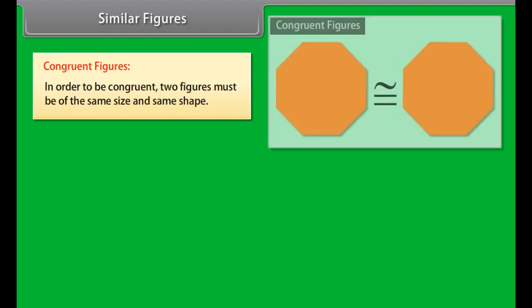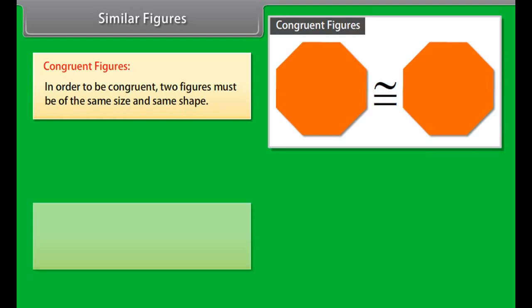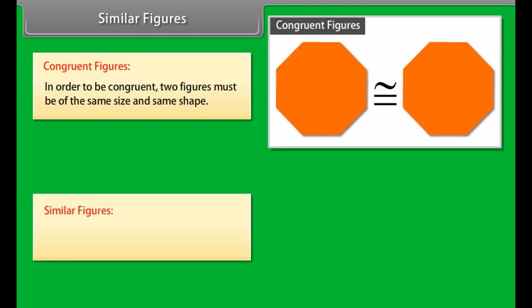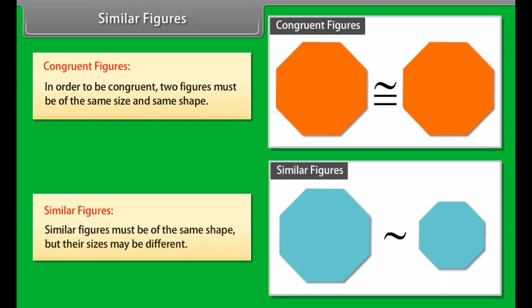Similar figures versus congruent figures. In order to be congruent, two figures must be of the same size and same shape. Similar figures must be of the same shape, but their sizes may be different. This is the symbol that means similar.